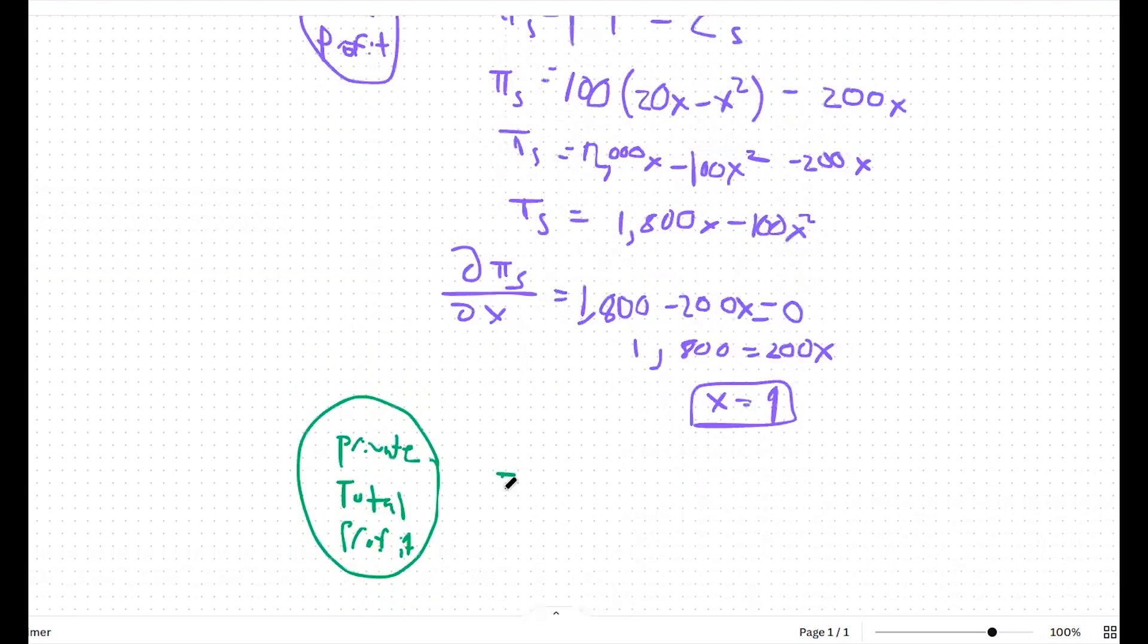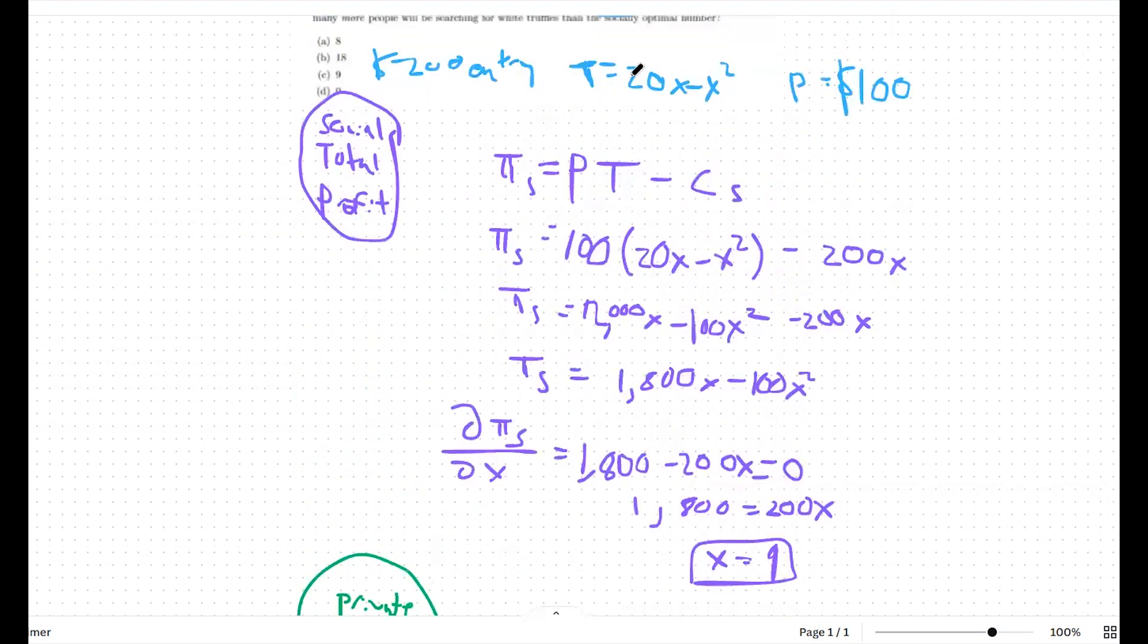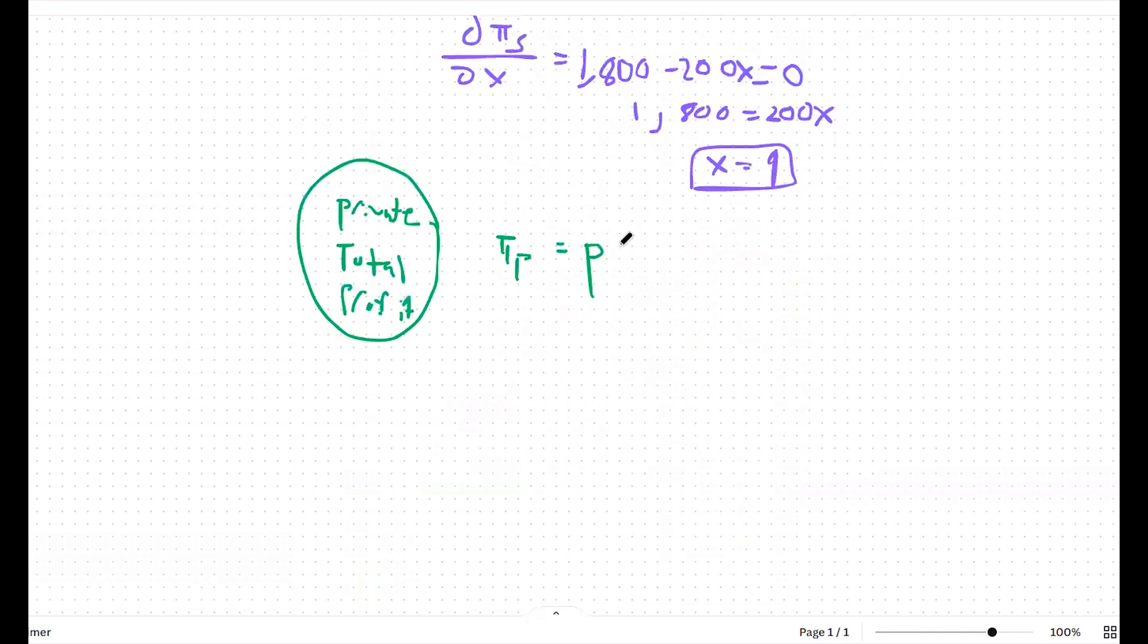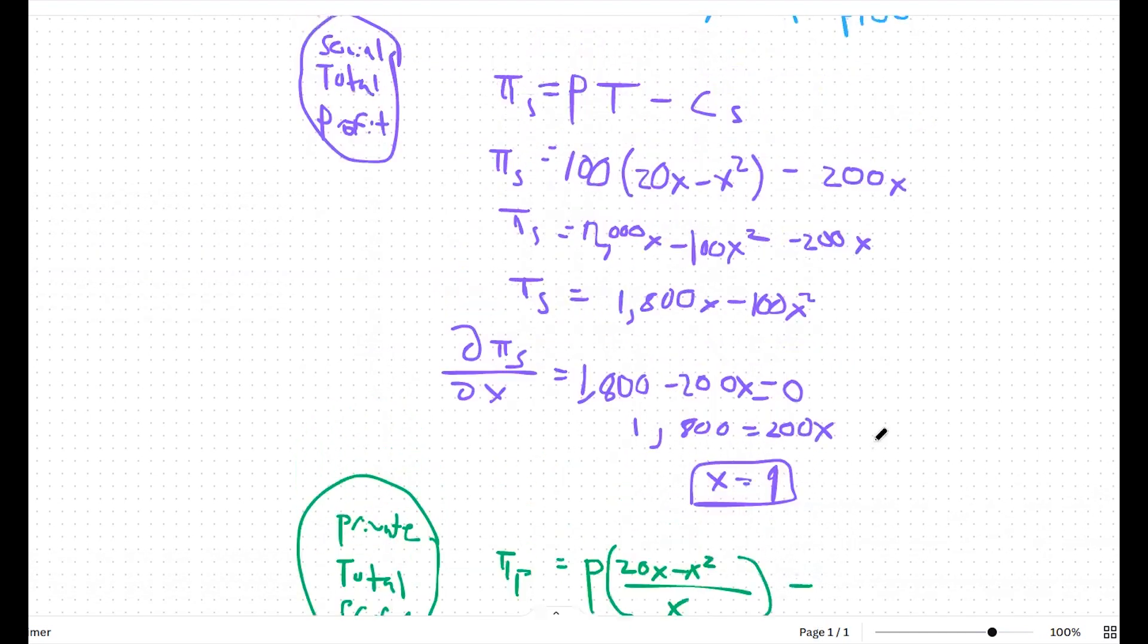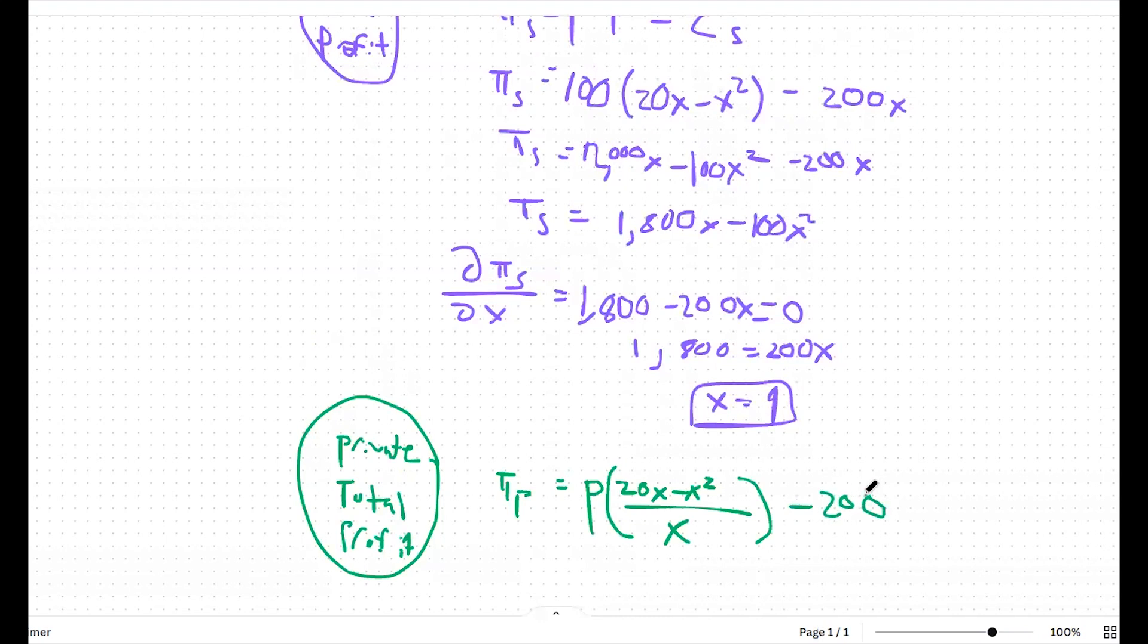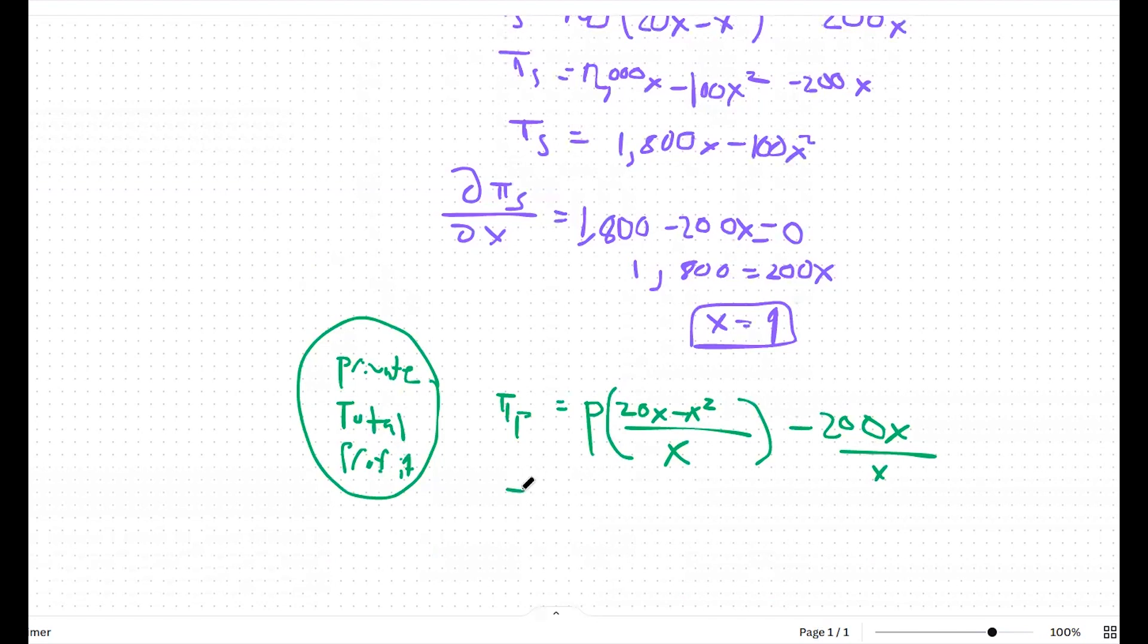Private total profit. And we're going to say profit privately is equal to P, again our market price for truffles, times the amount of truffles being hunted, which we found to be 20x minus x squared. And we're going to divide this by the number of people because we're finding a private profit, which means a per person profit. We're also going to subtract our cost per person, which is just going to be this 200 number. So again, we're going to divide by the number of people.